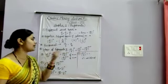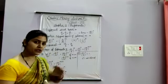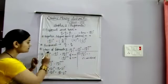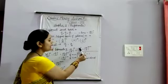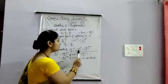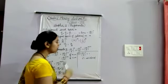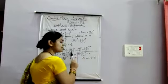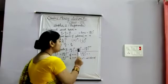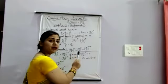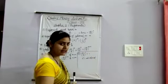Now, laws of exponents — there are 6 laws. The first law: if A upon B to the power M is multiplied by A upon B to the power N, the base is the same but the powers are different. We write the base once and add the powers: A upon B to the power M plus N.